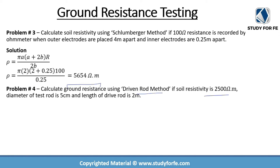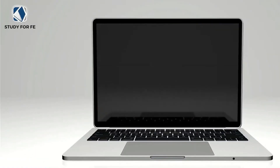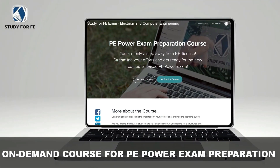Problem four asks us to calculate the ground resistance using the driven rod method if soil resistivity is 2,500 ohm-meter, the diameter of the test rod is 5 centimeters, and the length of the driven rod is 2 meters. Make sure to convert the diameter into meters. Plugging in these values into the driven rod equation gives a resistance of 948 ohms.